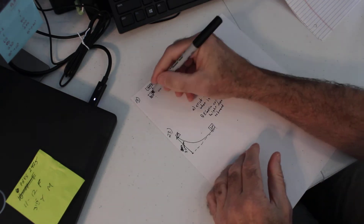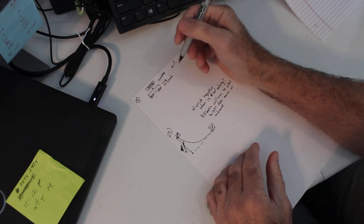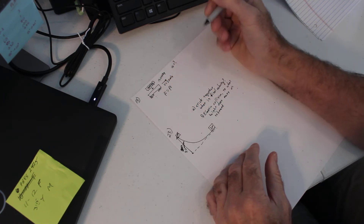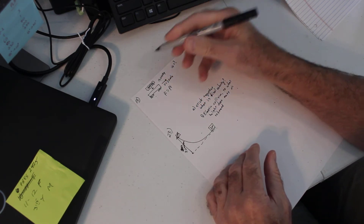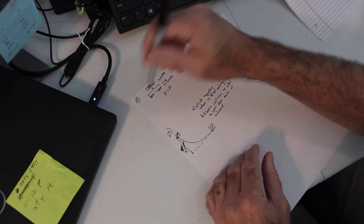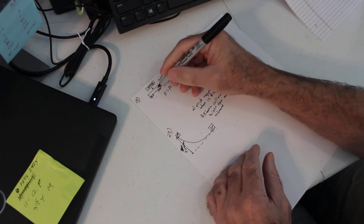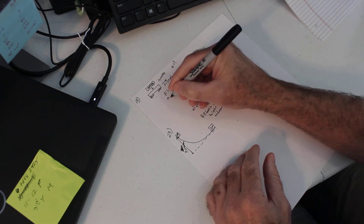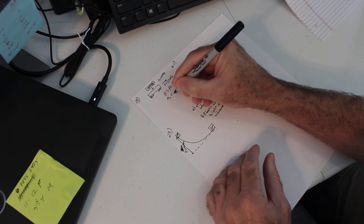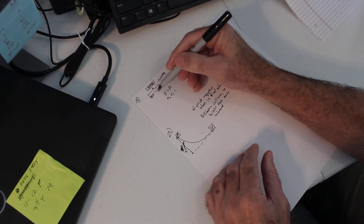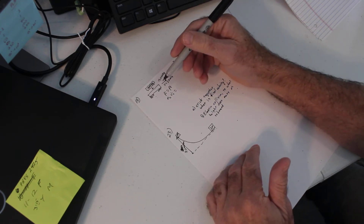We have an initial velocity and an initial momentum, so we're going to say the initial momentum is equal to final momentum — momentum is conserved. In this case, the movement is this way, so the gravel has no momentum in this direction. The only momentum is the car's. Now, when the gravel falls in, they stick together, so this is an inelastic collision.